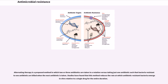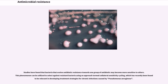Alternating therapy is a proposed method in which two or three antibiotics are taken in a rotation versus taking just one antibiotic, such that bacteria resistant to one antibiotic are killed when the next antibiotic is taken. Studies have found that this method reduces the rate at which antibiotic-resistant bacteria emerge in vitro relative to a single drug for the entire duration. Studies have also found that bacteria that evolve antibiotic resistance towards one group of antibiotics may become more sensitive to others. This phenomenon can be utilized to select against resistant bacteria using an approach termed collateral sensitivity cycling, which has recently been found to be relevant in developing treatment strategies for chronic infections caused by Pseudomonas aeruginosa.